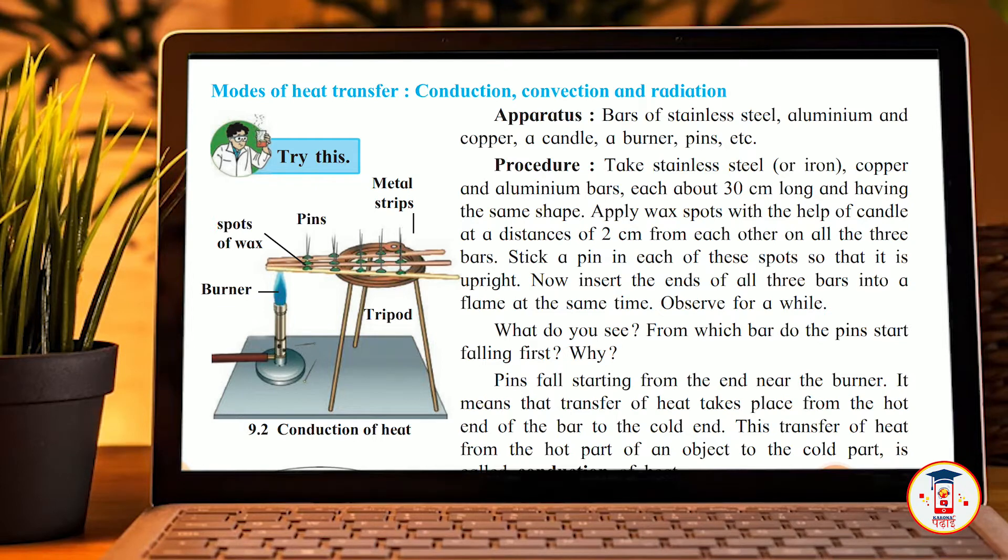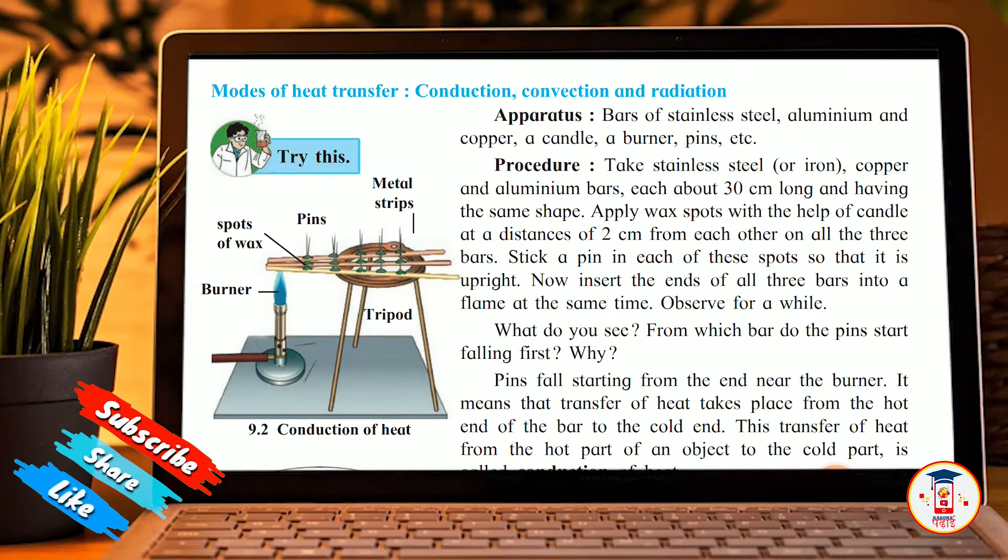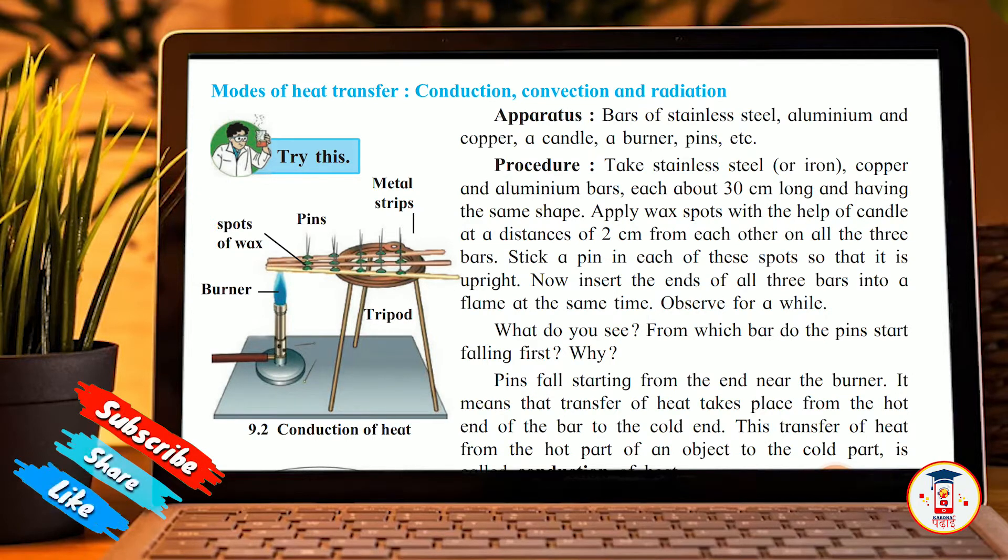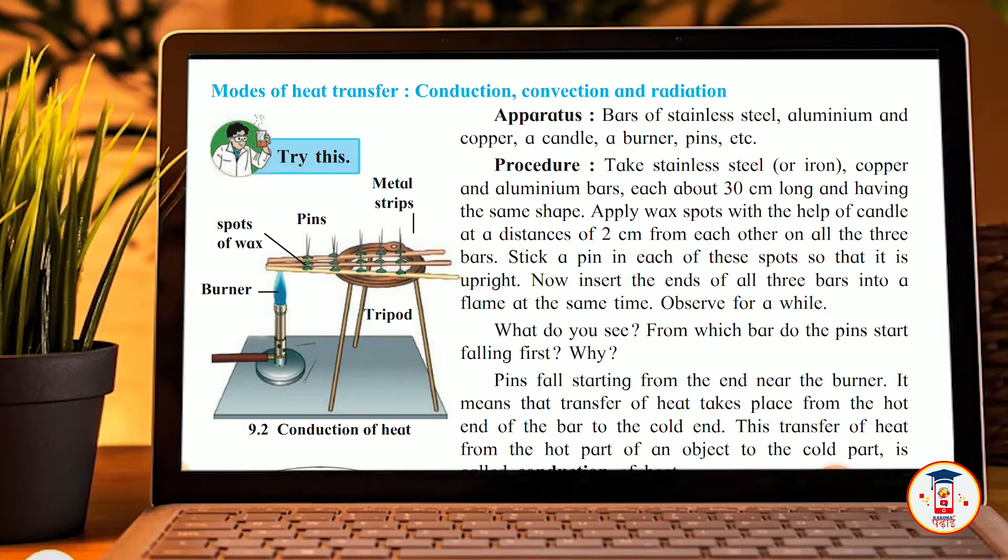First, we will see our first activity and what we need. We will see bars of stainless steel, aluminum, copper, a candle, burner, pins, etc. If you do this activity, you will not get the burner so easily. I hope you will see these activities in the school. If you are in the laboratory, there will be all these things available.